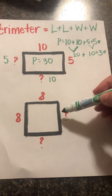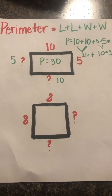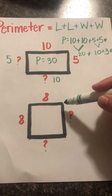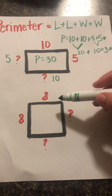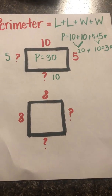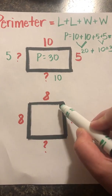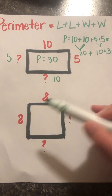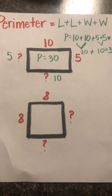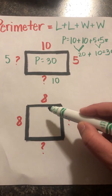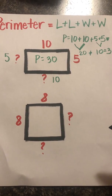Now let's look at the next shape, which is a square. Let's review what we know about a square. A square has four straight sides, and those four straight sides are equal in length. So let's take a look — we know that this side equals eight and this side equals eight, but we notice we don't have all of the side lengths. We said all of the sides have to equal the same length in order for it to be a square.